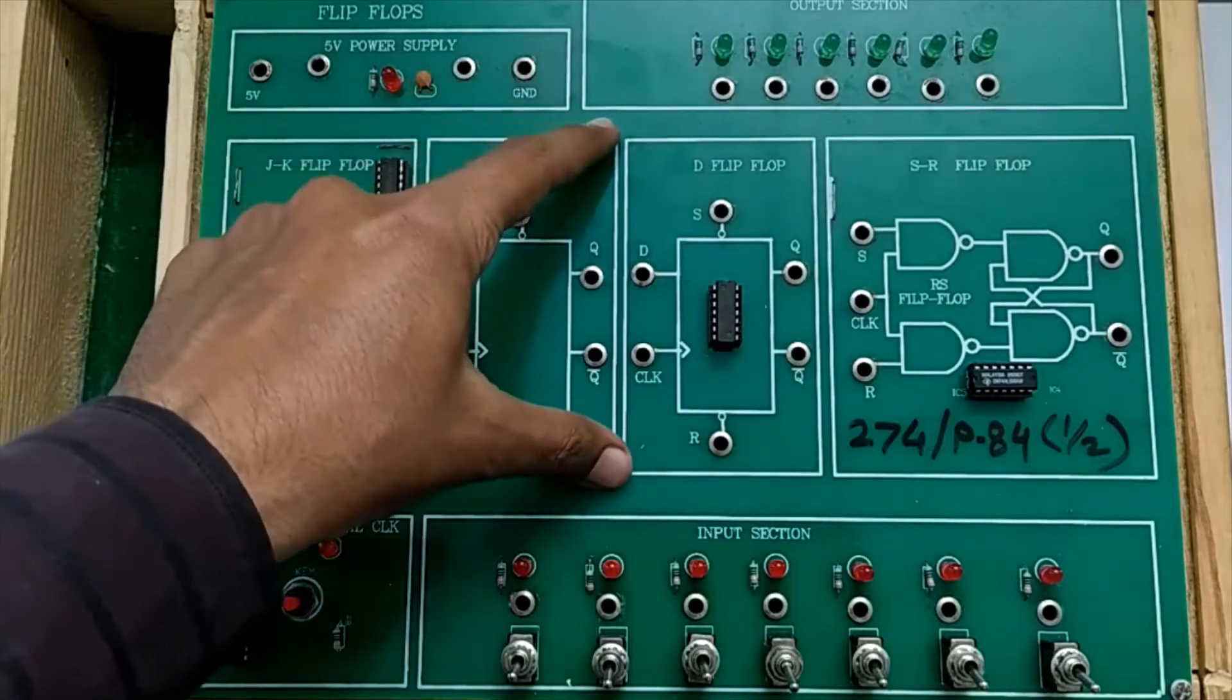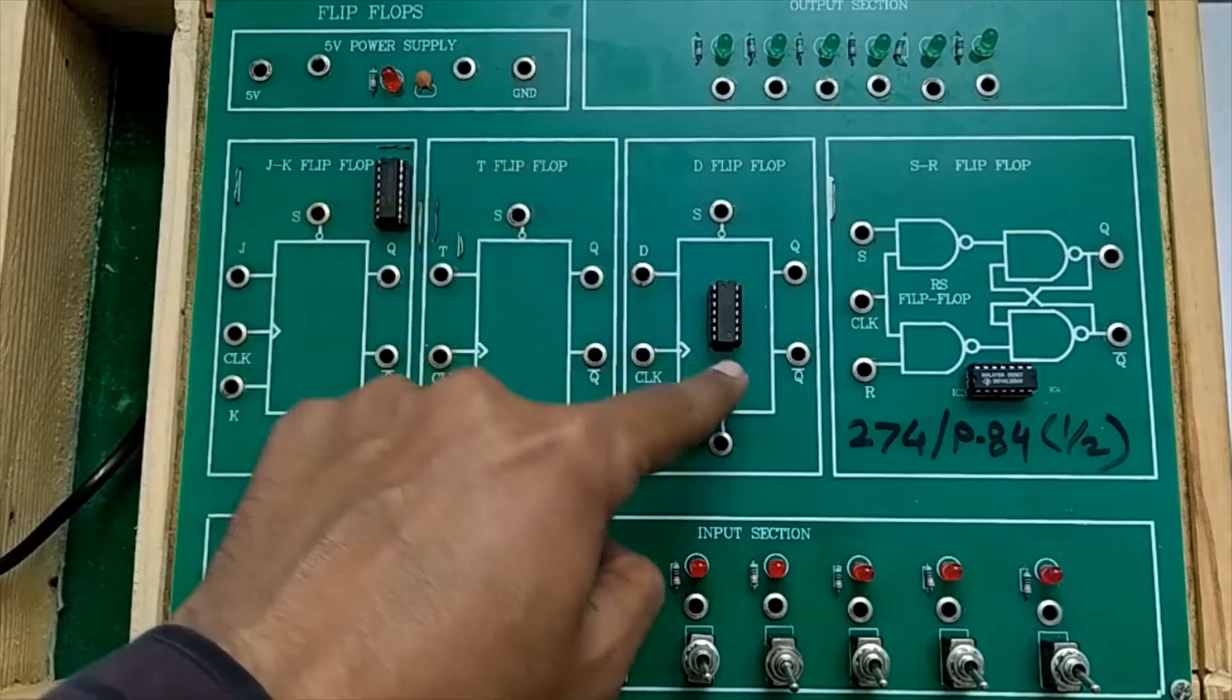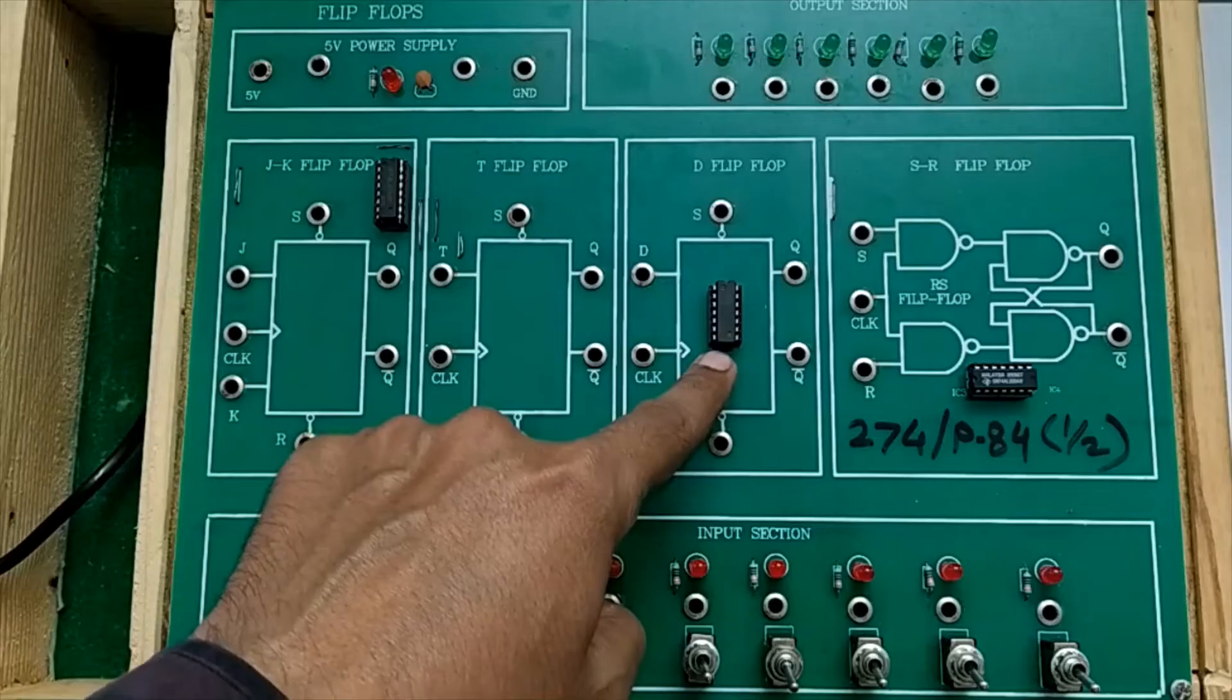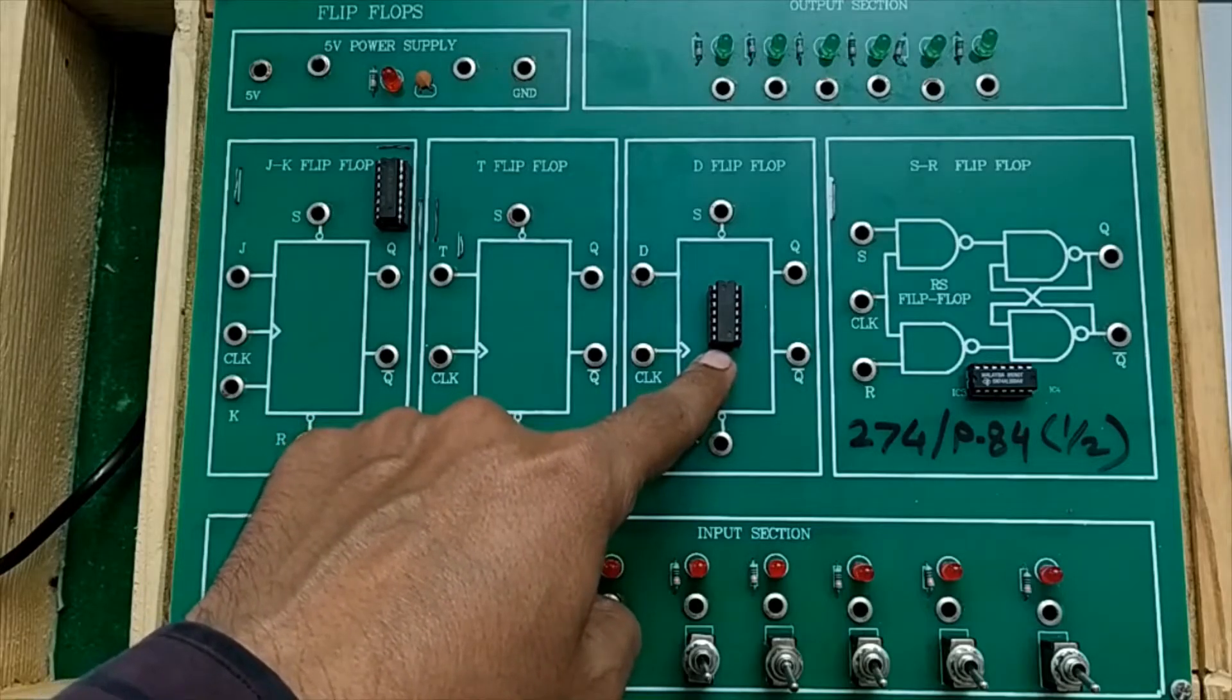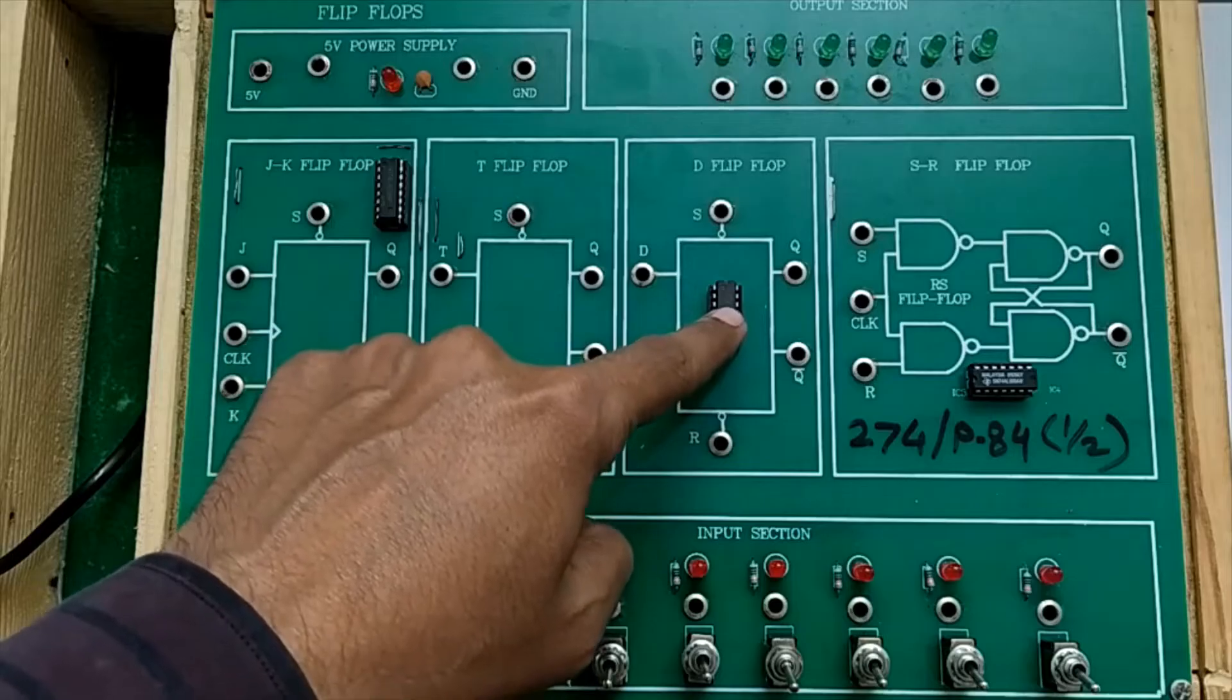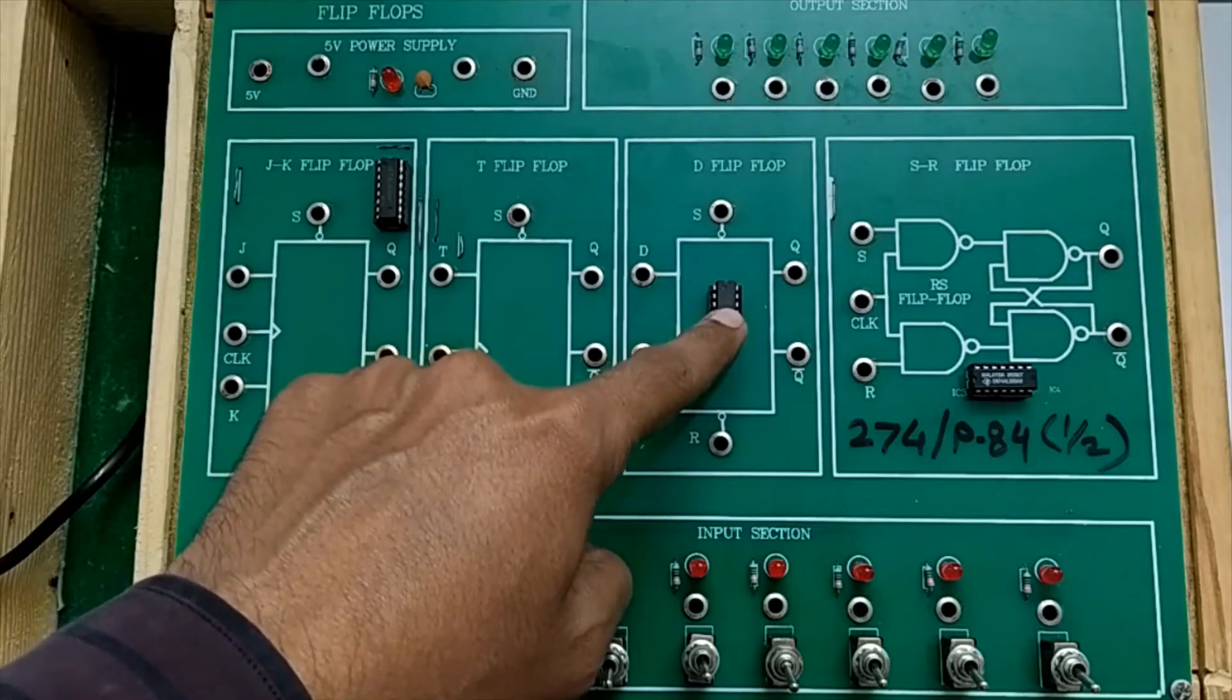We will concentrate mainly on D type flip-flop. This section is related to D type flip-flop. This is IC 7474 which is dual positive edge triggered D flip-flop. A single IC has two D type flip-flops inside it and they are positive triggered.